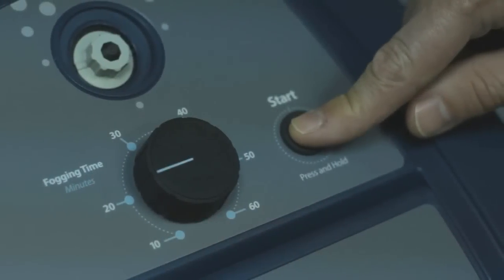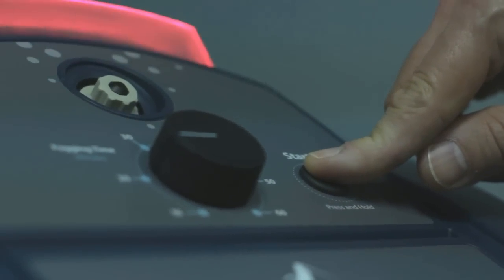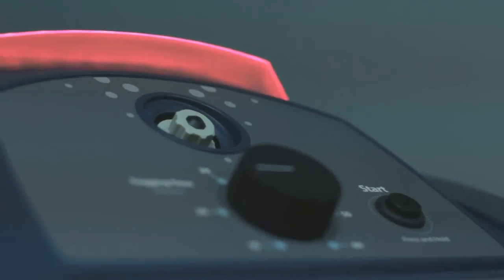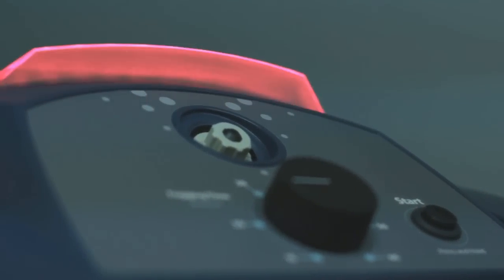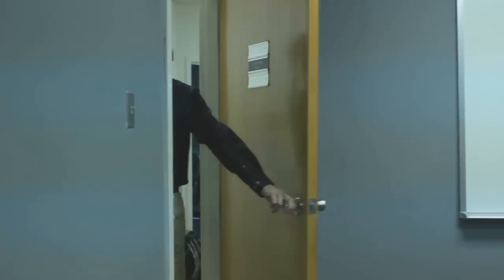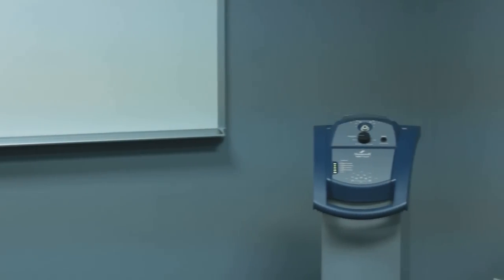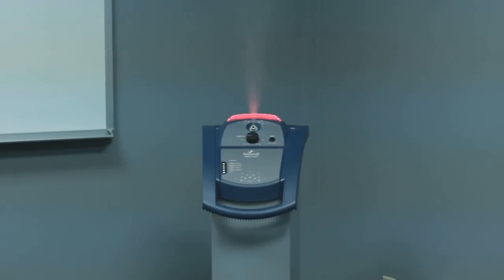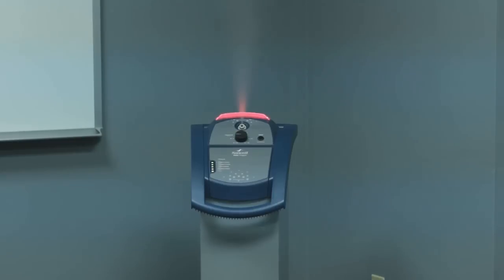To begin the treatment process, press and hold the start button for approximately two seconds. The green status indicator light will begin to flash red, indicating you have 30 seconds to leave the room before the Halo begins dispensing its disinfecting mist. The flashing red status indicator light will change to a steady red when the dispensing of atomized Sanosil begins.